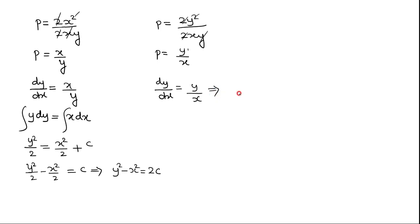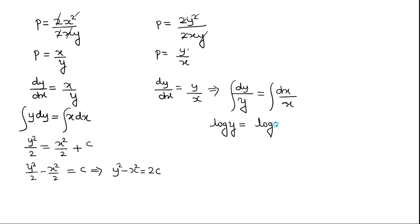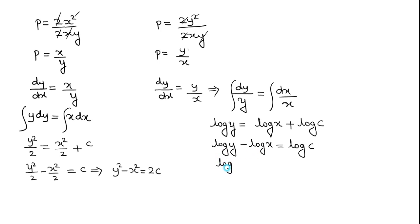Similarly, for dy by dx equals Y by X, this is also variable separable: dy by Y equals dx by X. On integrating, log Y equals log X plus log C. Taking it to the left hand side, log Y minus log X equals log C, which gives log of Y by X equals log C. Cancelling log from both sides, we have Y by X equals C.